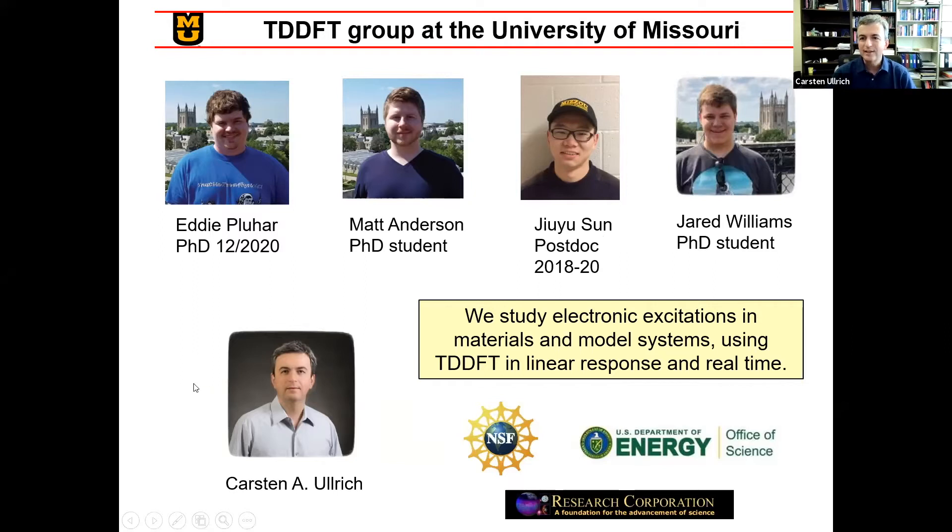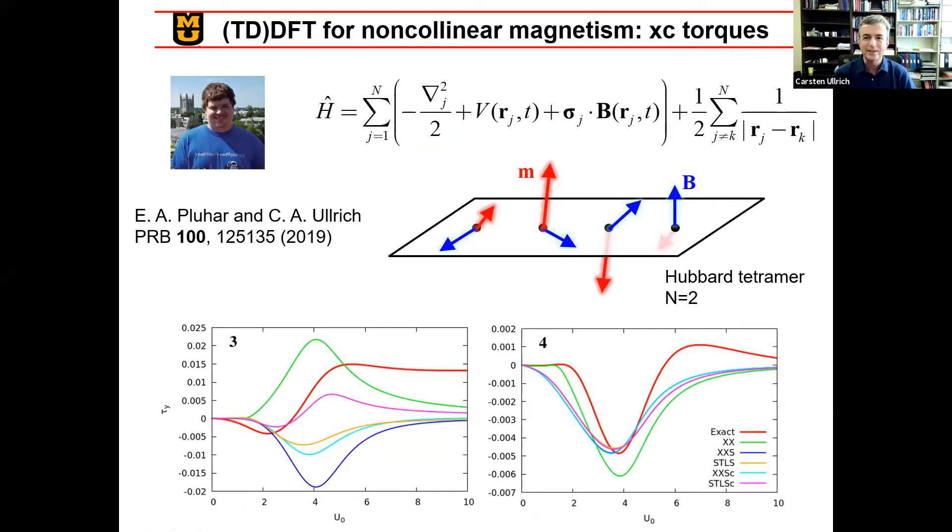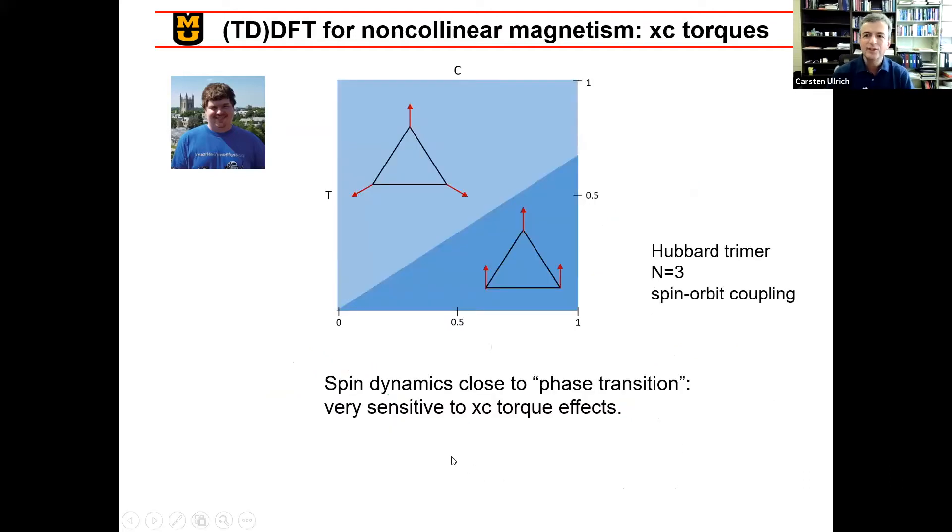So let me just tell you in just a few seconds what each of these guys has been doing. Eddie did his PhD on spin DFT for non-collinear systems. He worked on model systems and looked at things such as Hubbard-type models, such as this four-site Hubbard system with two electrons. The idea was to look at exchange correlation torques and compare various approximations in the ground state in the dynamical regime. He also looked at things like Hubbard-trimer, looking at the spin dynamics close to the linear to non-collinear phase transition and how this affects how the exchange correlation torques play a role there.